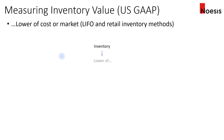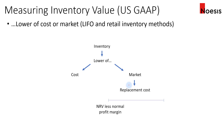Under US GAAP, inventory is measured at the lower of cost or market, where market is defined as the replacement cost of the inventory. This applies to LIFO and retail inventory methods. The replacement cost must fall within an upper limit (NRV) and a lower limit (NRV less normal profit margin). If inventory value drops below carrying value, it is written down and the loss is recognized in the income statement as part of cost of goods sold. In subsequent periods, reversal is prohibited under US GAAP.